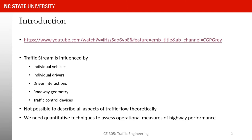Traffic control devices also influence traffic: a roundabout, a stop sign, or signalized intersections all affect flow. Because of the many players influencing traffic stream and the stochasticity between them, it is nearly impossible to describe traffic flow fully from a theoretical perspective. As a result, we often use quantitative techniques to evaluate operational measures, safety measures, and environmental measures of highway performance.